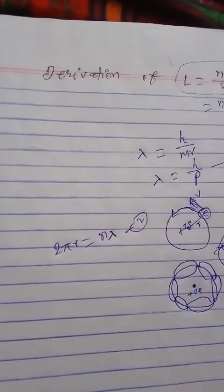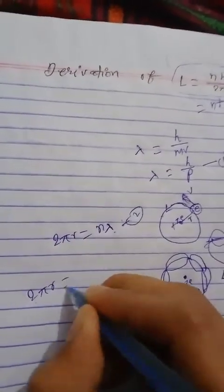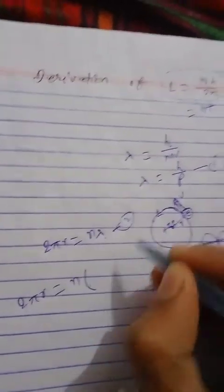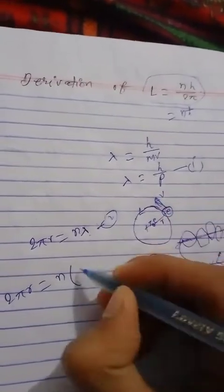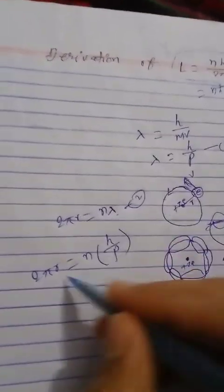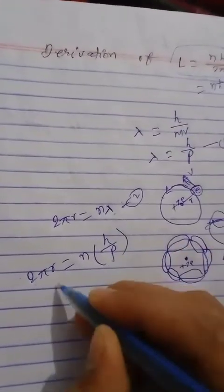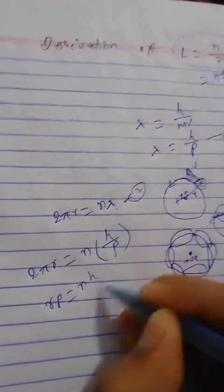So here now we have equation 2. We are combining equation 1 and equation 2. So we have 2πr equals n times lambda. We replace lambda by h upon p, so we get rp equals nh by 2π.